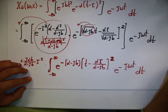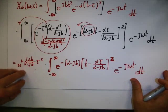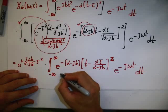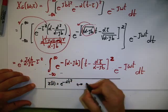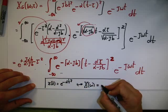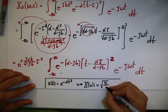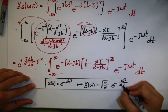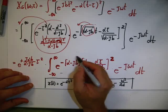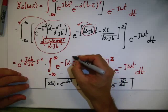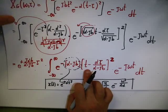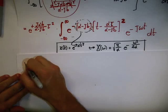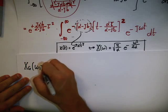We use the property that if x(t) = e to the minus alpha*t squared, the Fourier transform is square root of pi over alpha times e to the minus omega squared over 4*alpha, where the alpha here is this entire coefficient (alpha minus j*b). We also handle the time shift. We can now say that the Gabor transform Xg(omega, tau) equals that exponential term times the shifted term times the Fourier transform of the exponential.